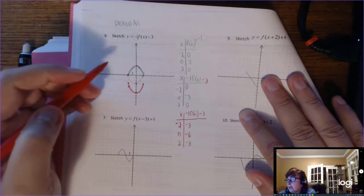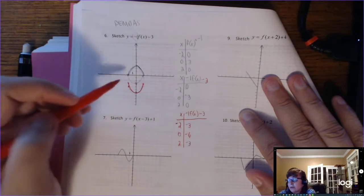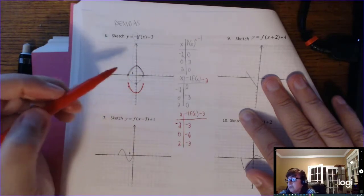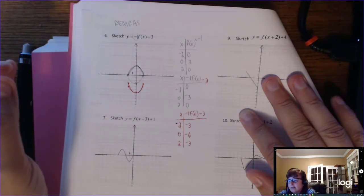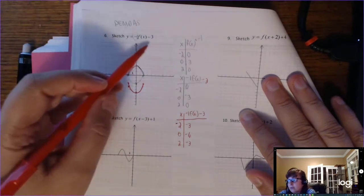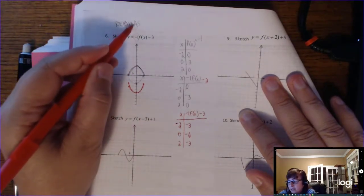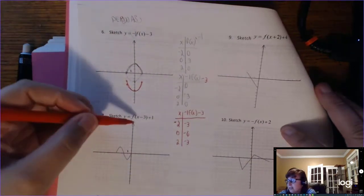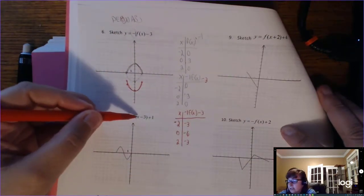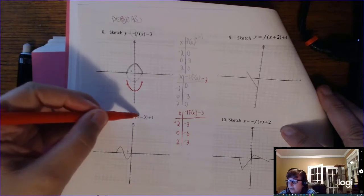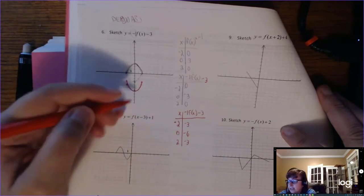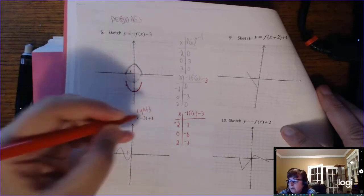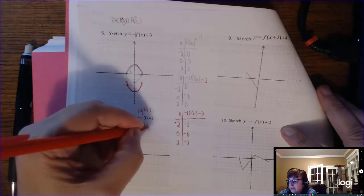If you did not do this in the right order — if you did 'down 3' first and then flipped — it's going to give you a different graph. So the order matters: you have to multiply first and then subtract. Now, if there's a minus 3 with the x, that moves it right 3, meaning you add 3 to the x's.